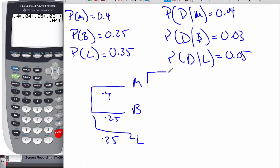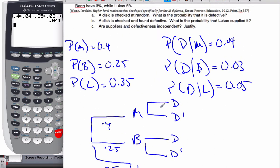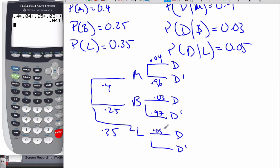Now, if it comes from Marco, it could be defective or not defective. Defective or not defective. Defective or not defective. And so now, if I look at these probabilities, this is 0.04, so 96%. 0.03, 0.97, and then 0.05, and 0.95.